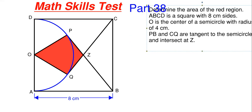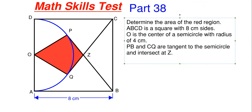What we have in this one is that we have to determine the red area shown inside this region. We are told that the entire outer shape ABCD is a square with eight centimeter sides. Point O is the center of the semicircle shown in blue, which has a radius of four centimeters, so it aligns perfectly with the edges at A and D. We are also told that P down to B is tangent to the semicircle, and C to Q is also tangent to the semicircle, and they intersect at point Z.